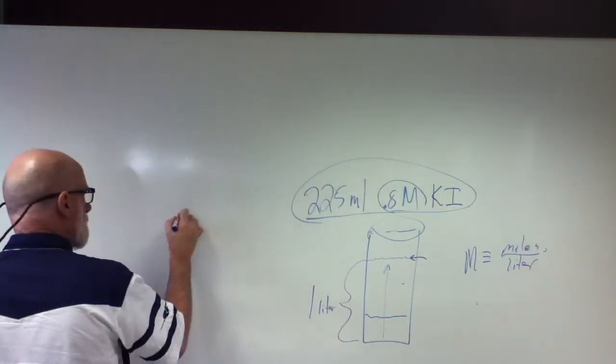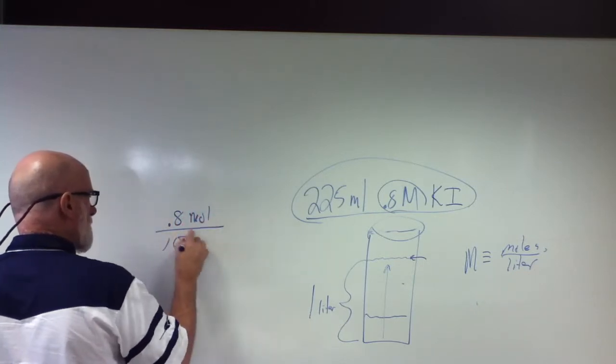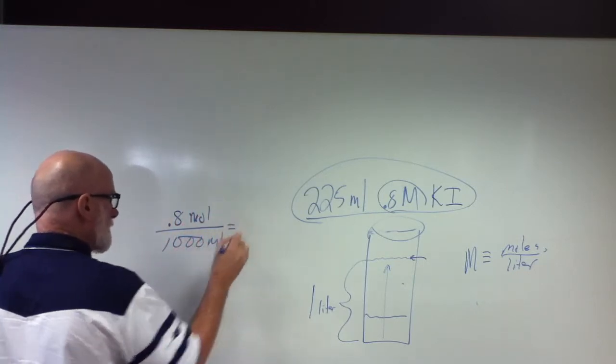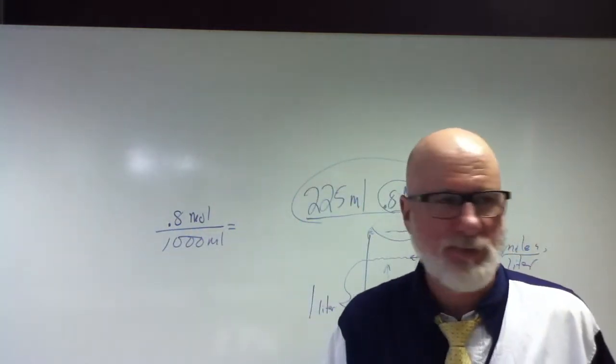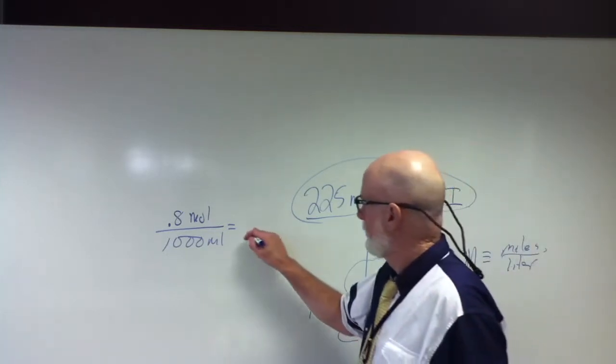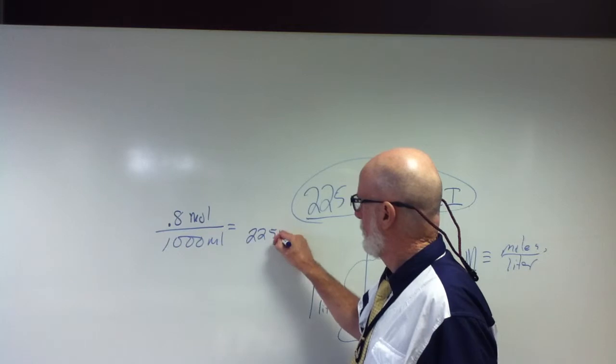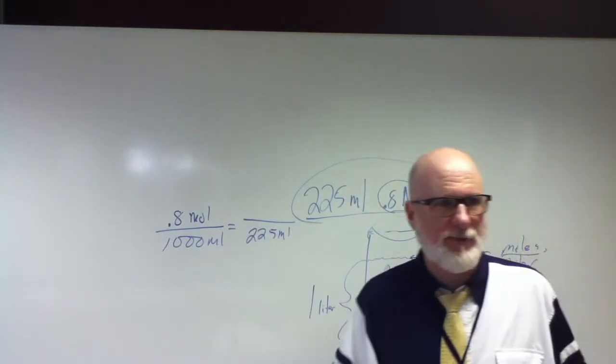Well, I know I have this volume of that molar solution. So I have 0.8 moles in 1000 milliliters. How many moles are there in 225 milliliters? So what's 0.8 times 225 divided by 1000?